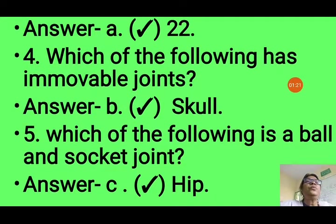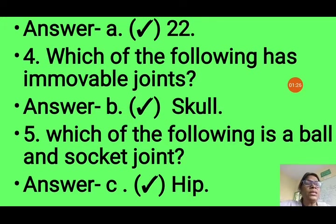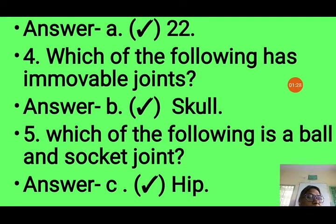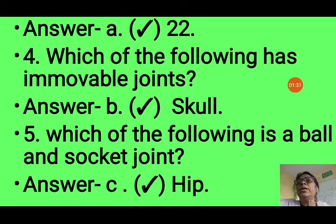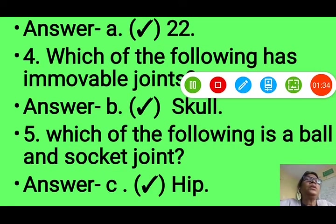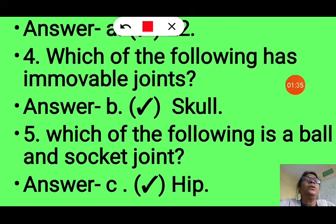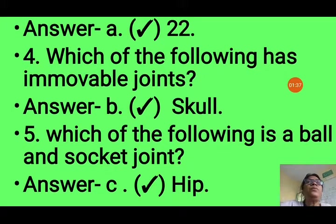Fourth question: Which of the following are immovable joints? Options are limbs, shoulder, skull, and hip. We know that immovable joints are present in the skull, so we take option C — skull.